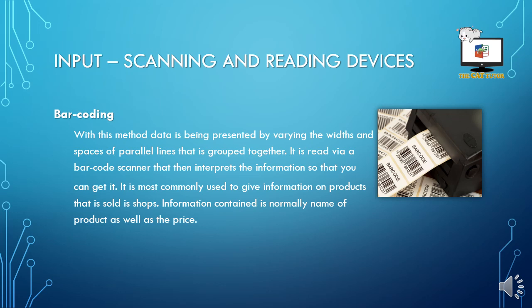Barcoding. With this method, data is presented by varying the width and spacing of parallel lines grouped together. All those little lines — sometimes different thickness, sometimes different lengths, sometimes different widths apart — determine the uniqueness of the barcode and what information can be stored or recorded from it. It is read via a barcode scanner that interprets the information. It is most commonly used to give information on products sold in shops, normally including the name of the product and the price.